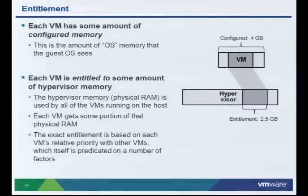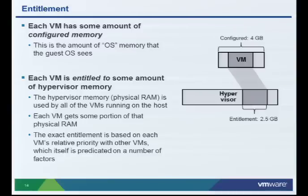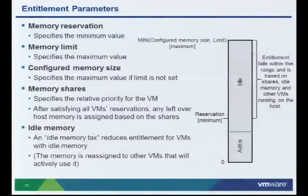Let's dig into this concept of entitlement. Each VM has some amount of configured memory — say, four gigabytes — but that doesn't mean the hypervisor will necessarily give it all four gigabytes. There may be other VMs running with higher priorities, or there may not be enough memory to go around, so that VM may only get a fraction. The hypervisor figures out how much memory to give based on a few familiar parameters: reservation, limit, shares, configured memory size, and idle memory tax.